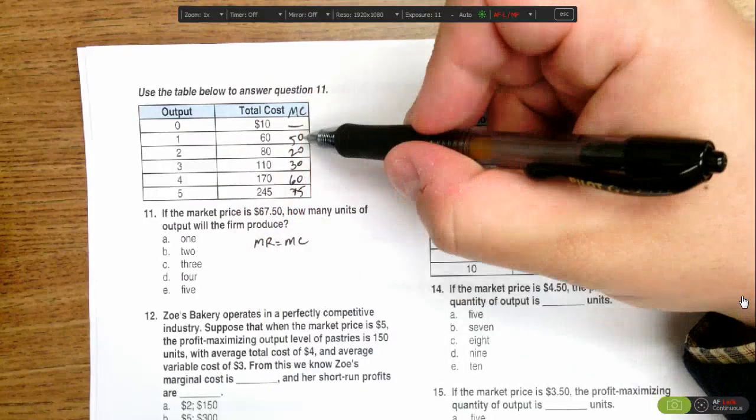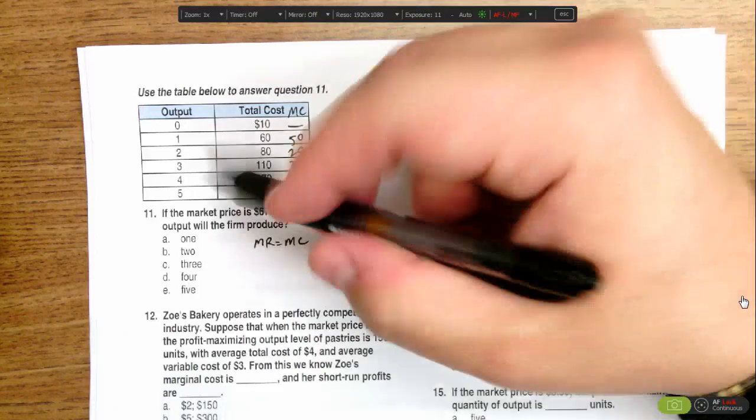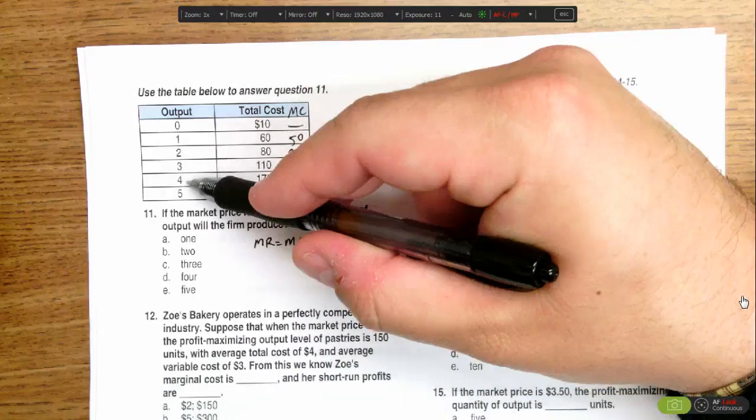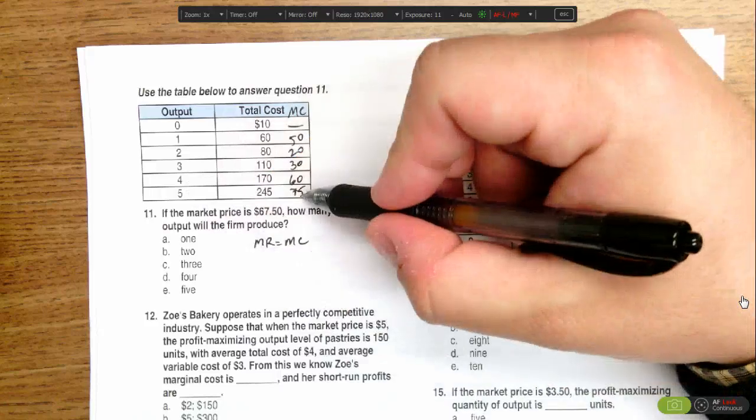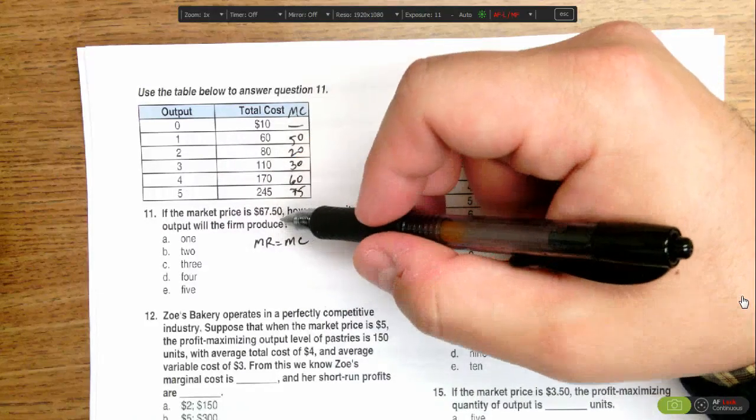So we look to see the last point at which marginal revenue is either greater than or equal to marginal cost, and that happens at an output of four. If we produce five, it costs us $75, but we only make $67.50, so we wouldn't make five. So the answer here then is four.